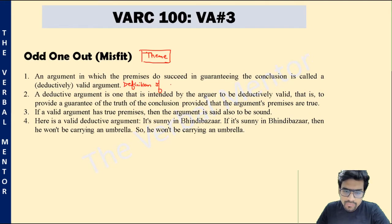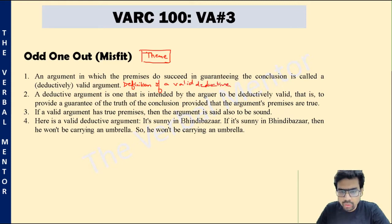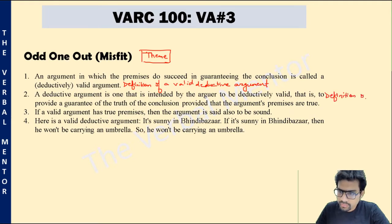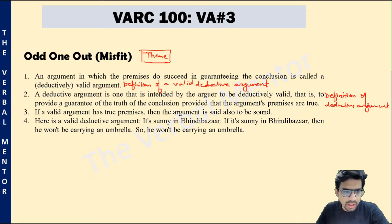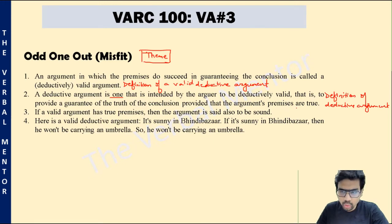Sentence number one is a definition of a valid deductive argument — it defines what a valid deductive argument is. Sentence number two is again about the definition of a deductive argument. It tells you what a deductive argument is: one that is intended by the arguer to be deductively valid, that is, to provide a guarantee of the truth of the conclusion provided that the argument's premises are true. So sentence two tells you what a deductive argument is, and sentence one tells you when a deductive argument is considered valid.